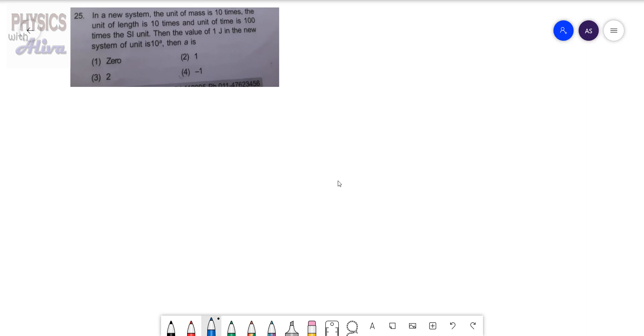The value of 1 joule in the new system of unit is 10 to the power a, then a is what?